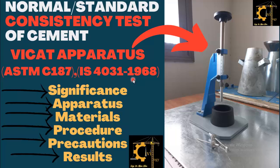Hello guys, welcome to my channel. In this video, we are going to perform the normal or standard consistency test of cement by using Vicat apparatus. Vicat apparatus is used for a number of practicals or experiments that can be performed on cement, which we will discuss in my upcoming videos.